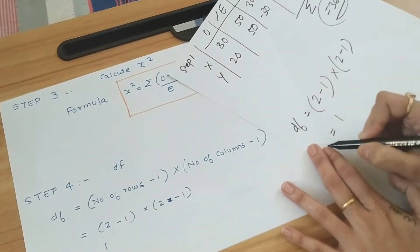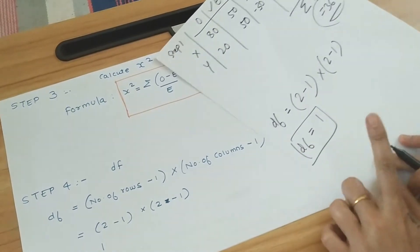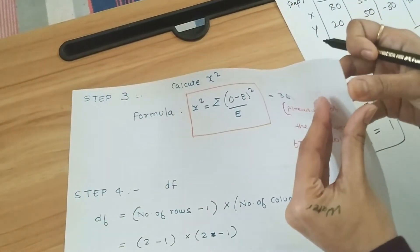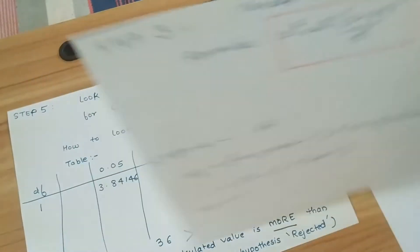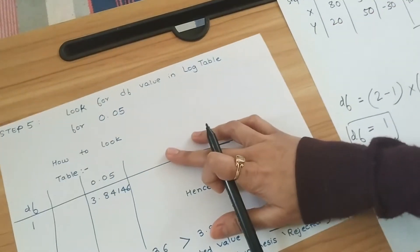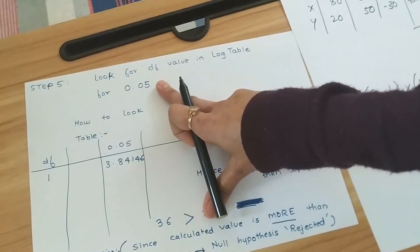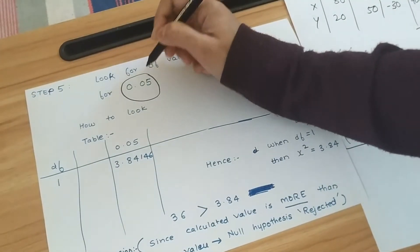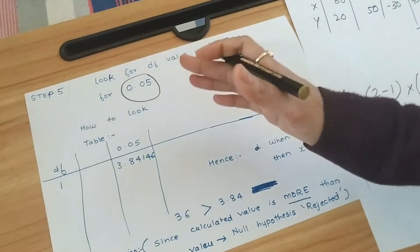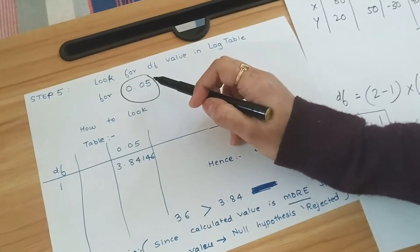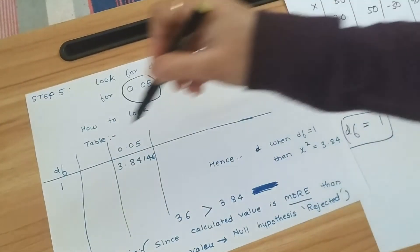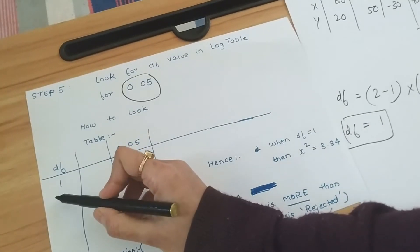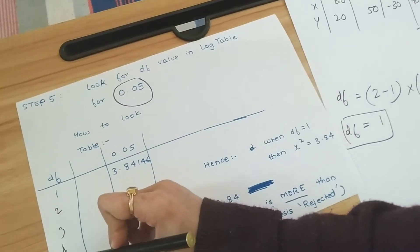Now we have to do something with this df value. We have a table given. It will be given in the exam too. There will be a table. What we have to look for is, you have to remember, 0.05. It will be written in the column heading somewhere. 0.05 will be written, and here all the values will be written: 1, 2, 3, 4, and so on.